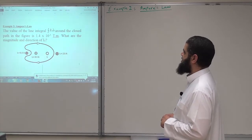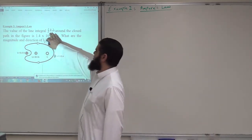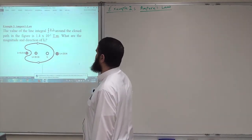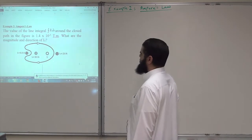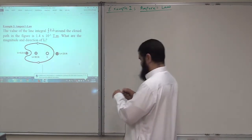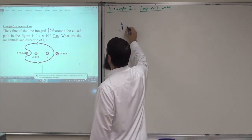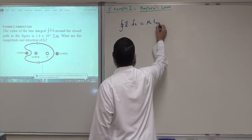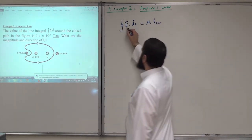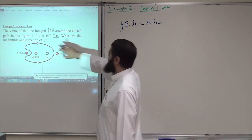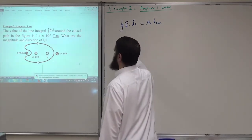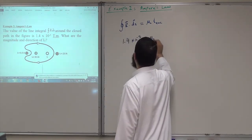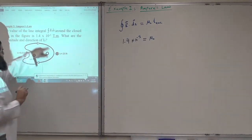The value of the line integral, which is the left-hand side of Ampere's law, around the closed path in the figure is 1.4 × 10⁻⁵ Tesla·meter. What are the magnitude and direction of i3? Ampere's law states: the closed integral of B dot dS equals μ₀ times I enclosed. The left-hand side is given as 1.4 × 10⁻⁵ T·m, so: 1.4 × 10⁻⁵ = μ₀ × I enclosed.